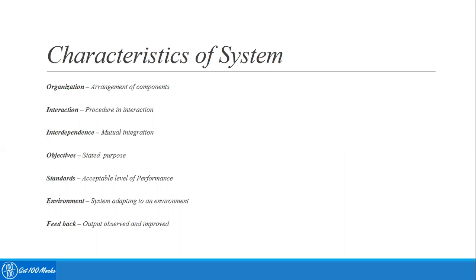The characteristics of a system include organization, interaction, interdependence, objectives, standards, environment, and feedback. Let's first start with organization. Organization deals with how the various components of the system are organized or arranged — it implies the structure and order of the system. For example, the hierarchical relationship in a business organization represents the organizational structure.